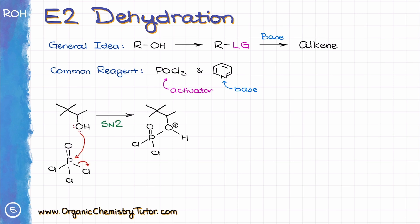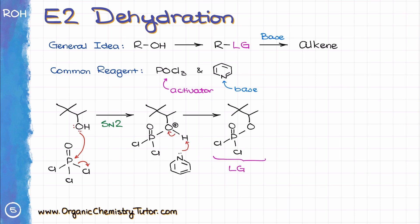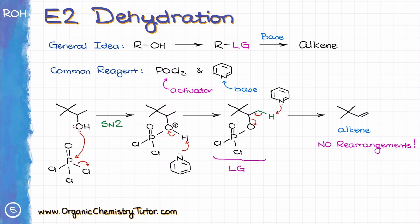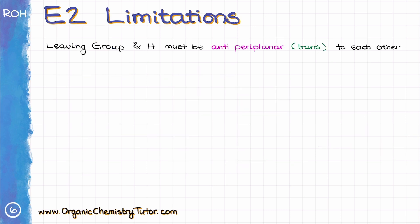The reaction starts with the alcohol attacking the phosphorus and displacing one of the chlorines in a typical SN2 reaction, although the substrate may not be very typical. Then we do a proton transfer to make a neutral intermediate. At this point, instead of the OH, we have an excellent leaving group. Since we are working with pyridine as our solvent, the next equivalent of pyridine comes in and does a typical E2 reaction, giving us the alkene product with no carbocation rearrangements. Since this is an E2 reaction, the leaving group and the hydrogen must be antiperiplanar to each other for the reaction to happen. This reaction also tends to give the Zaitsev product when possible.